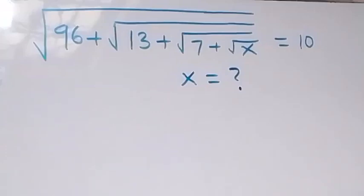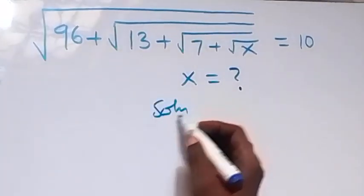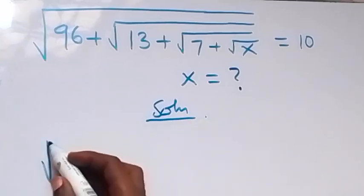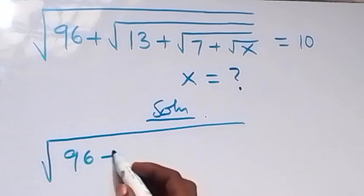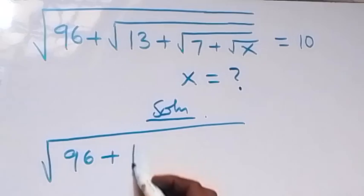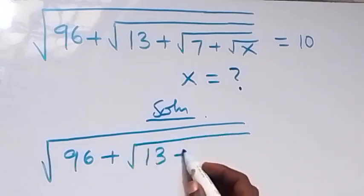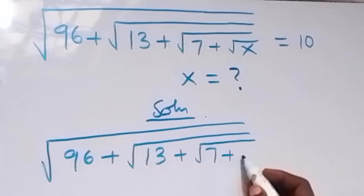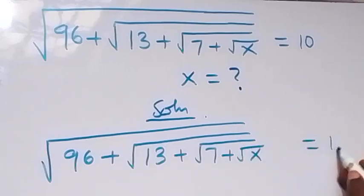Hello, you are welcome to solve for x in this nice square root problem. What is given is square root of 96 plus square root of 18, plus square root of 7 plus square root of x, equals to 10.